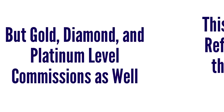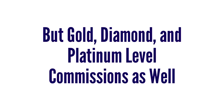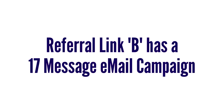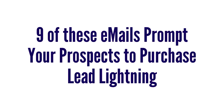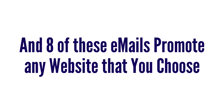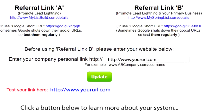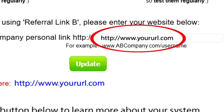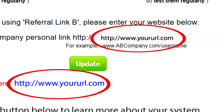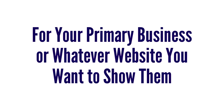This means by promoting either referral link A or B, you have the chance to earn not just $6 commissions, but gold, diamond, and platinum level commissions as well. Referral link B has a 17-message email campaign — nine of these emails prompt your prospects to purchase Lead Lightning, and eight of these emails promote any website that you choose. These are professionally written emails created to get your prospects excited about what they're about to see. Whatever website you enter here, which is right below the video you're watching, will insert a clickable link directly into those emails.